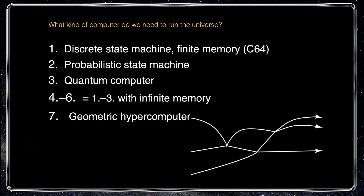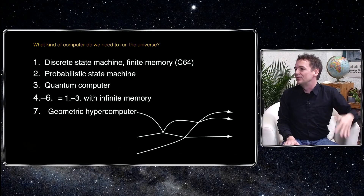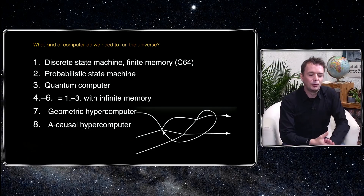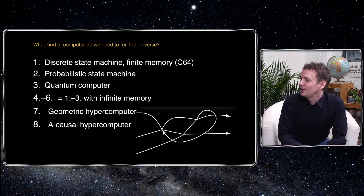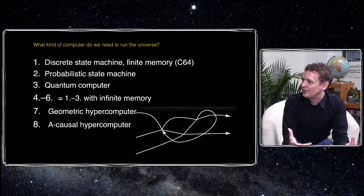Or we could take the perspective of physics, which mostly thinks that the universe is geometric, which means things move continuously, and there is, at least at the time level, infinite resolution. And it could also be that it's even an acausal computer — there could be closed time-like loops, so information could be sent back in time. All these are, in some sense, mathematical possibilities.